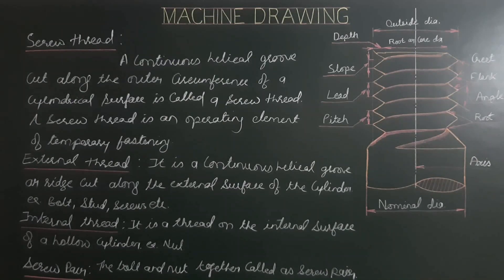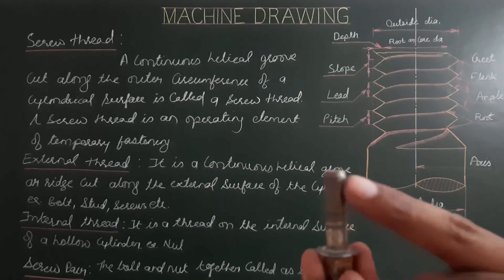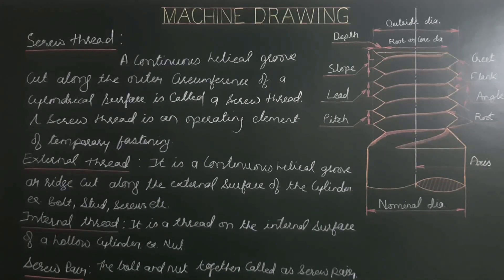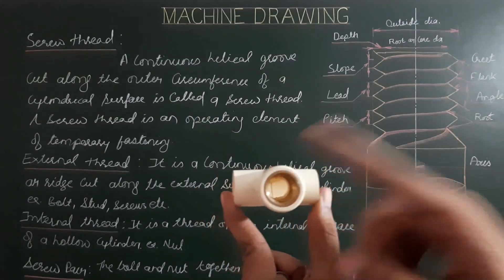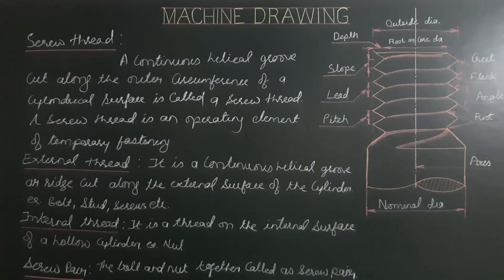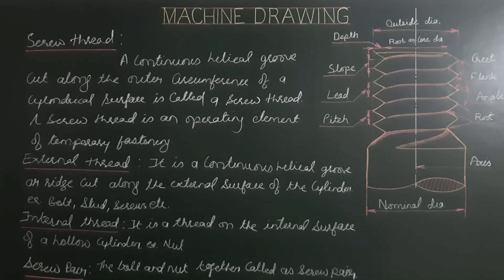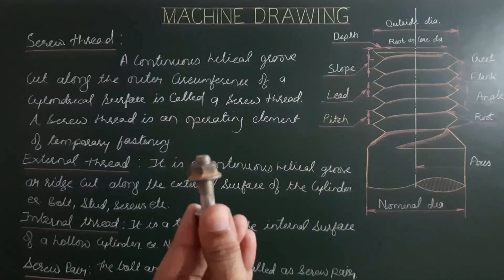Examples of external threads are bolt, stud, screw, etc. Internal thread is a thread on the internal surface of a hollow cylinder — for a nut, these are on the internal surface. The bolt and nut together are called a screw pair.